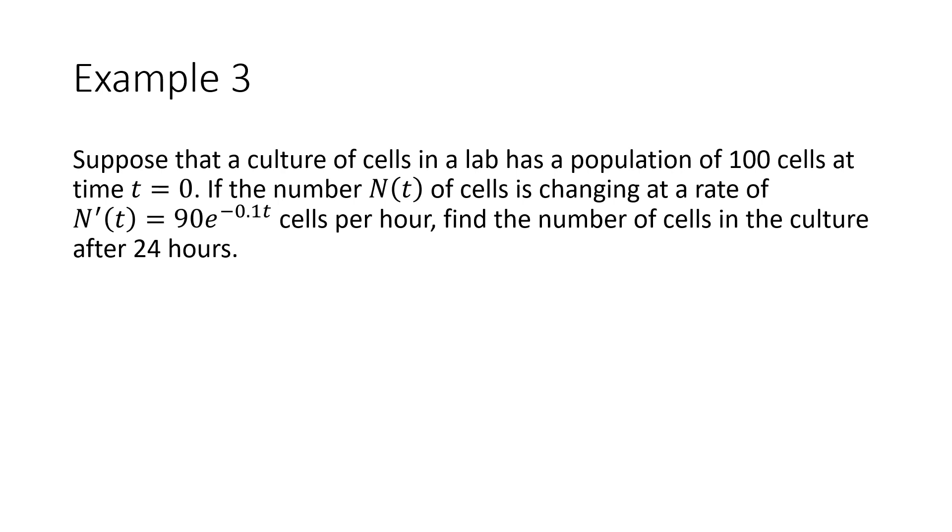So again, working through an example here, our quantity is the number of cells in a culture. We're told that the culture has 100 cells at time t equals 0. So again, that's them telling us that N(0) equals 100. So that's how we interpret has a population of 100 cells at time t equals 0. And then the number of cells is changing at a rate of N'(t) equals 90 times e to the negative 0.1t cells per hour. We want to find the number of cells in the culture after 24 hours.